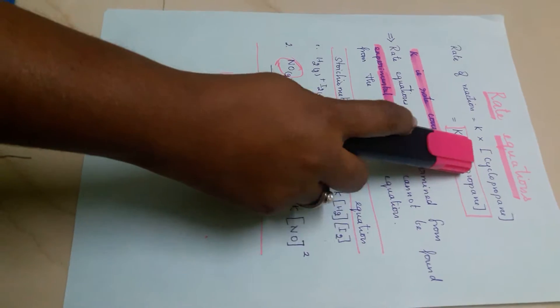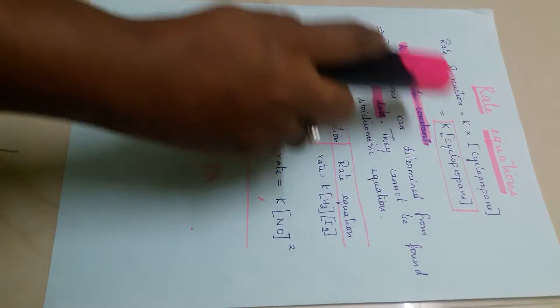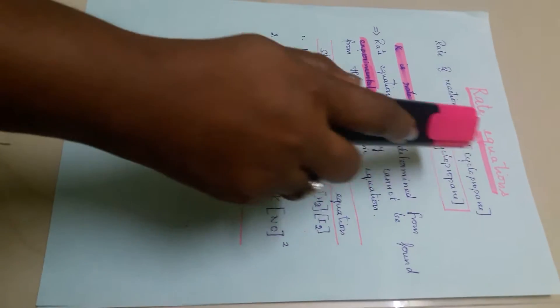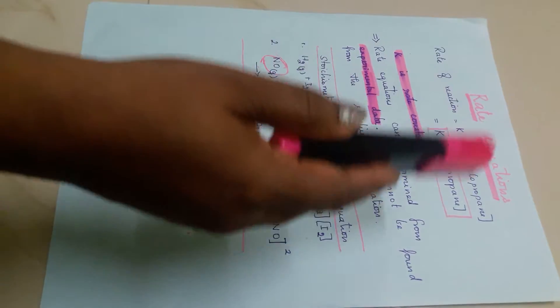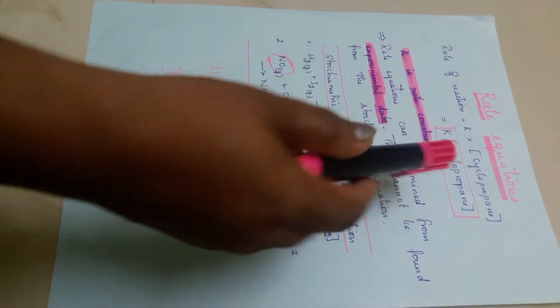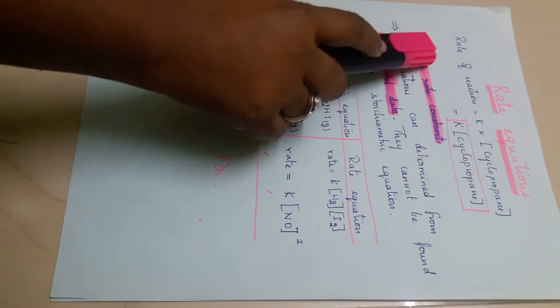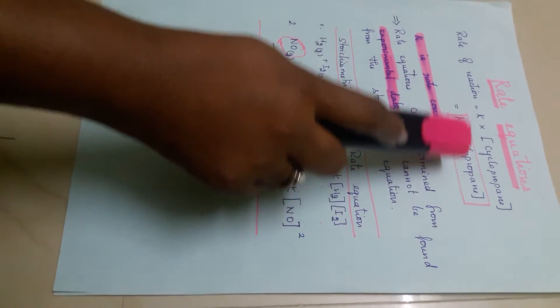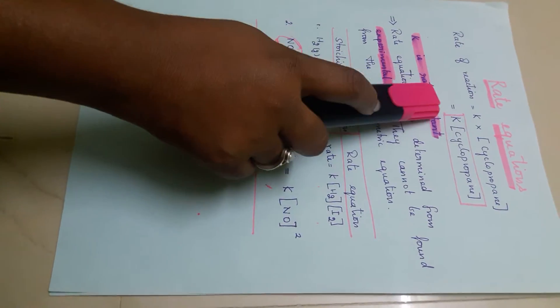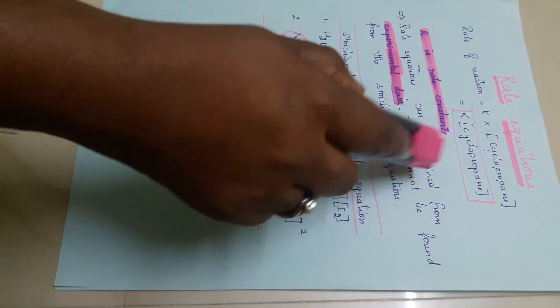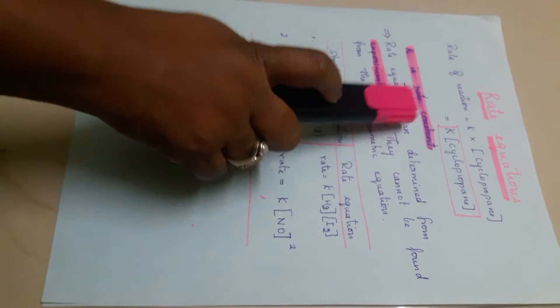Here I have written cyclopropane. If you see the isomerization of cyclopropane into propene, when you change the concentration of cyclopropane, the rate of the reaction also changes. That is why rate of reaction is K into [cyclopropane]. The square bracket shows concentration, and K is a rate constant.